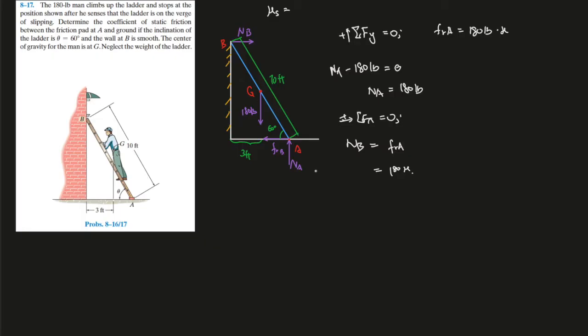So now we used the sum of Y and X, so we can use a moment. The best way is to use the sum of the moments at A. It gets rid of the most amount of unknowns. Sum of the moments at A because there's only one unknown. We're looking for mu; everything else is being solved. Since there's only one unknown, pick the easy one.